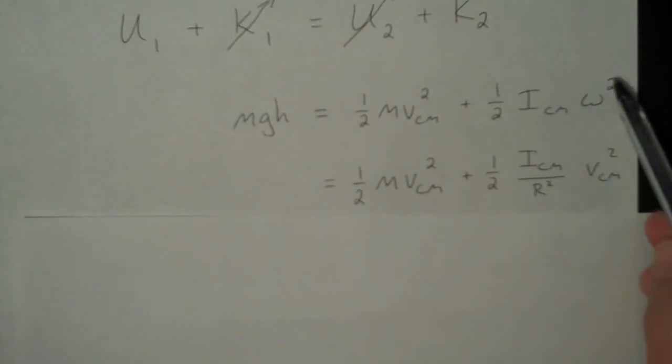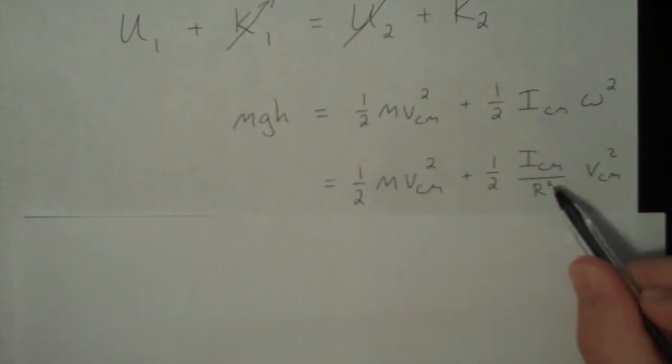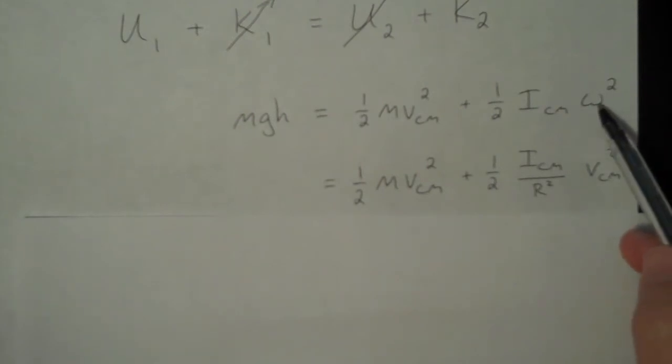So, since I'm taking omega squared, omega squared is equal to vcm squared divided by r squared. And I just put the divided by r squared underneath the moment of inertia. Of course, I can slide that around in this term, no problem.